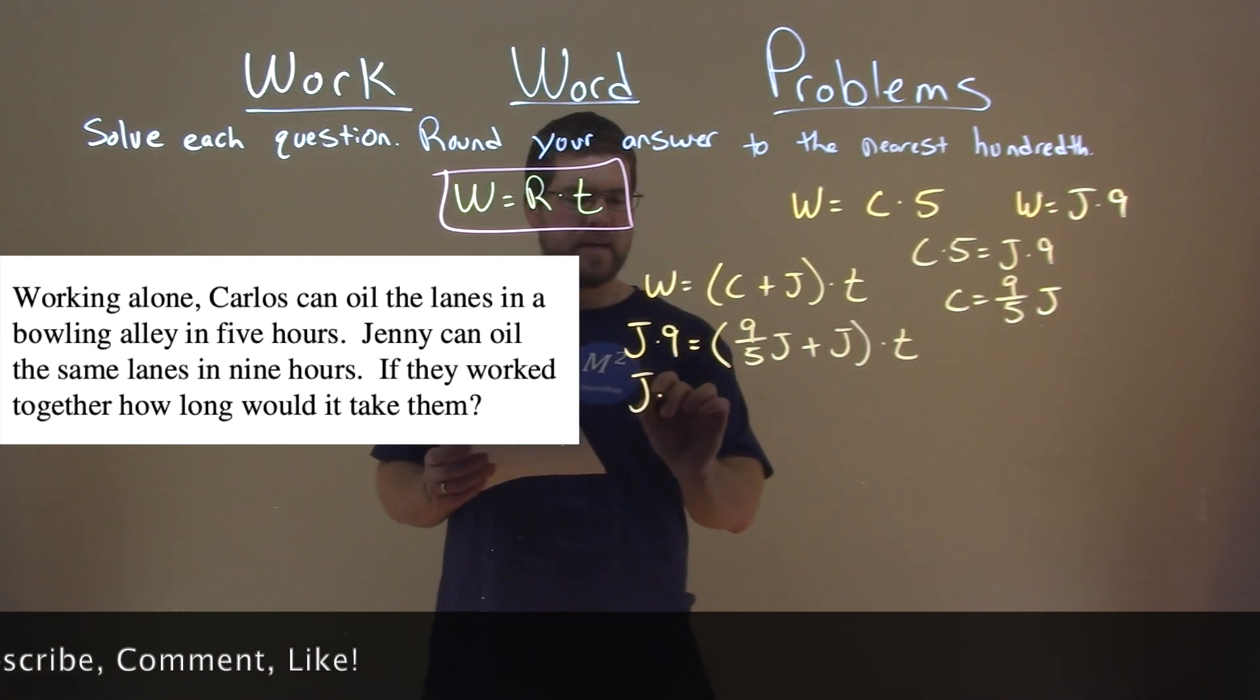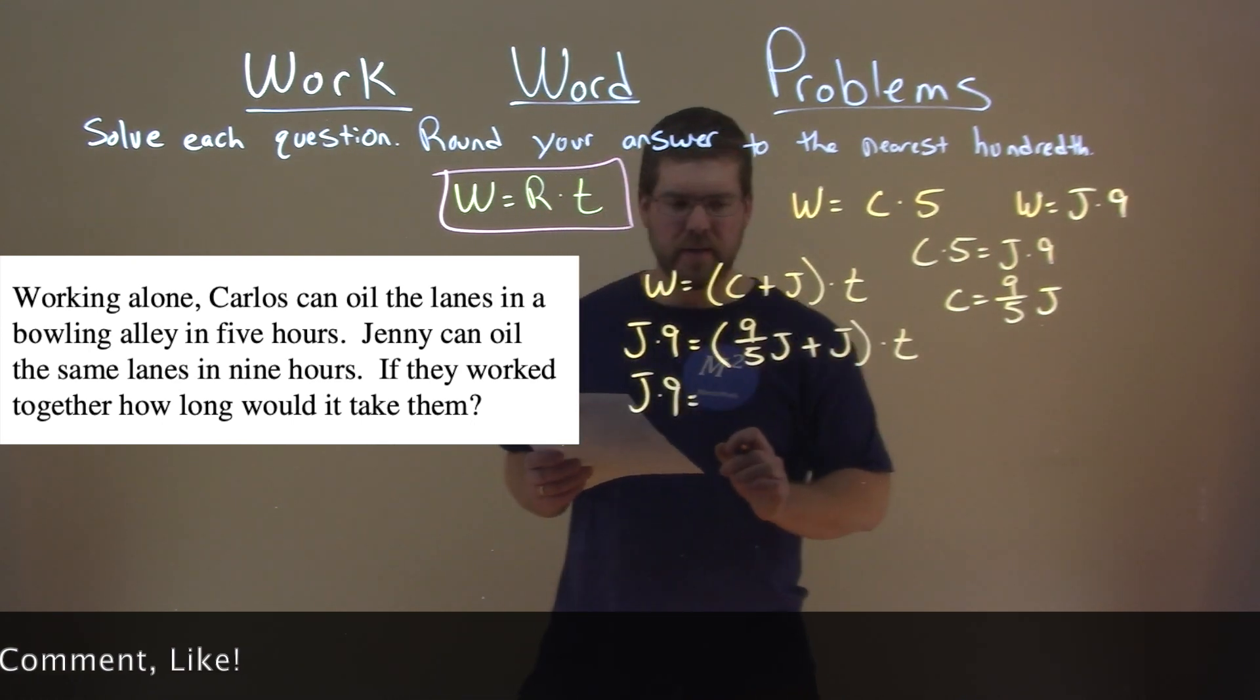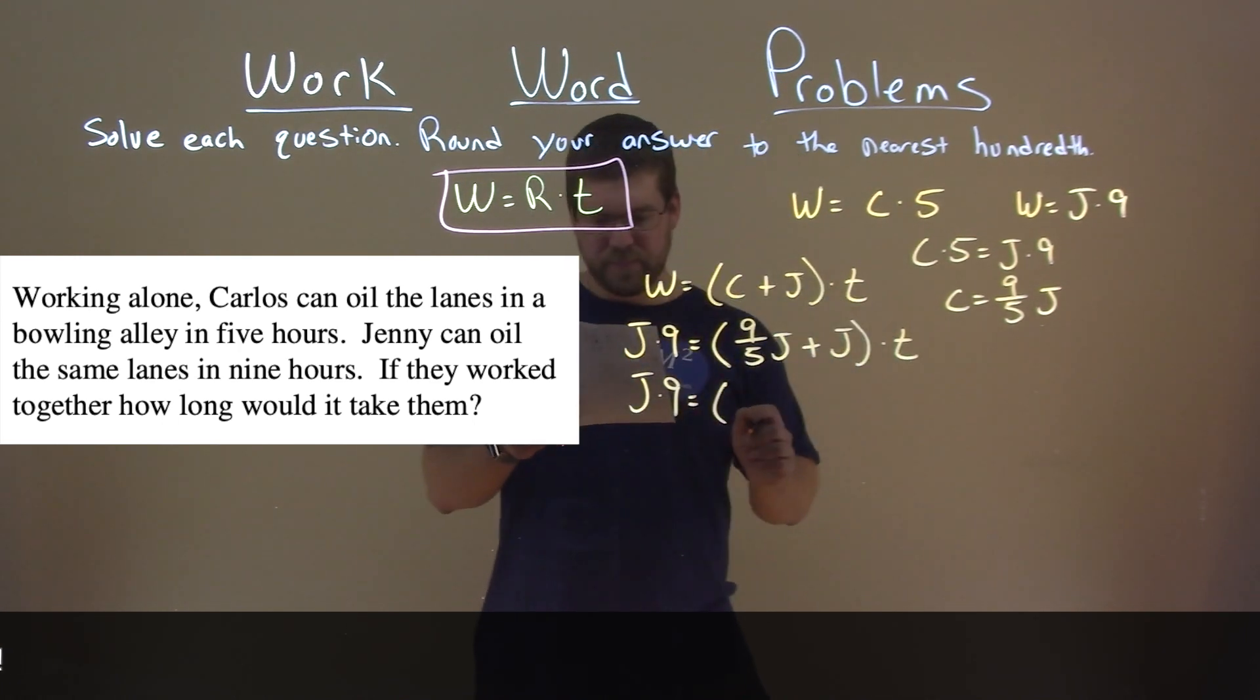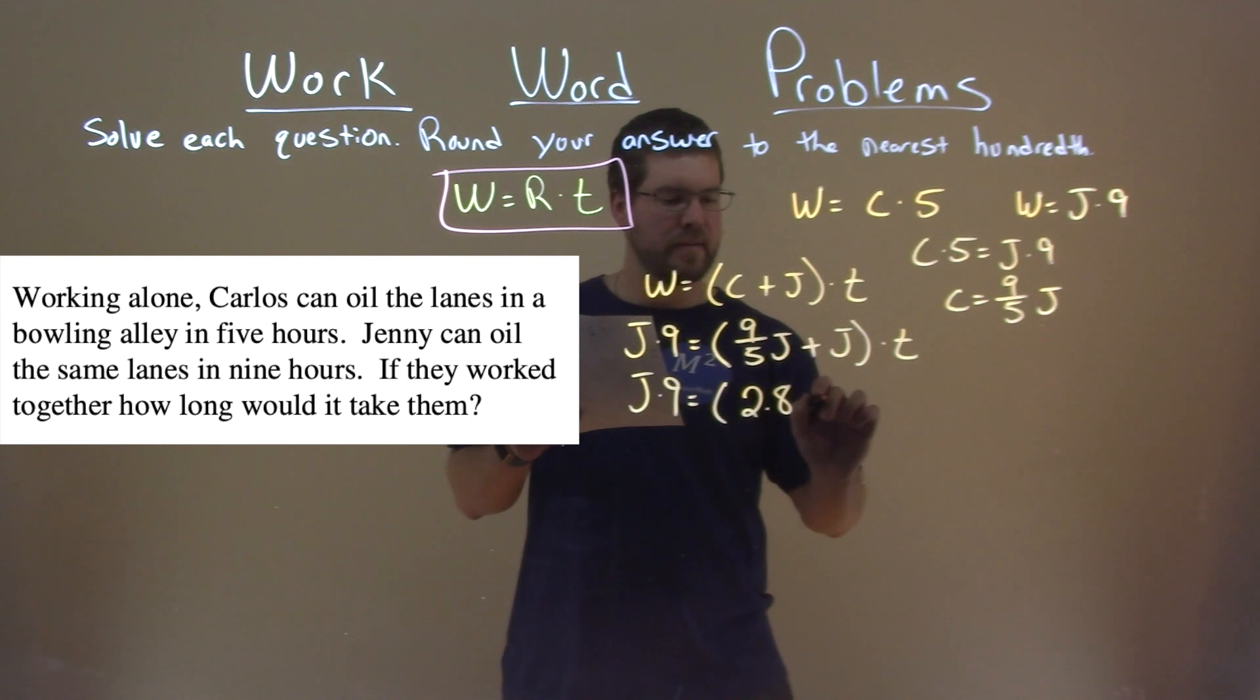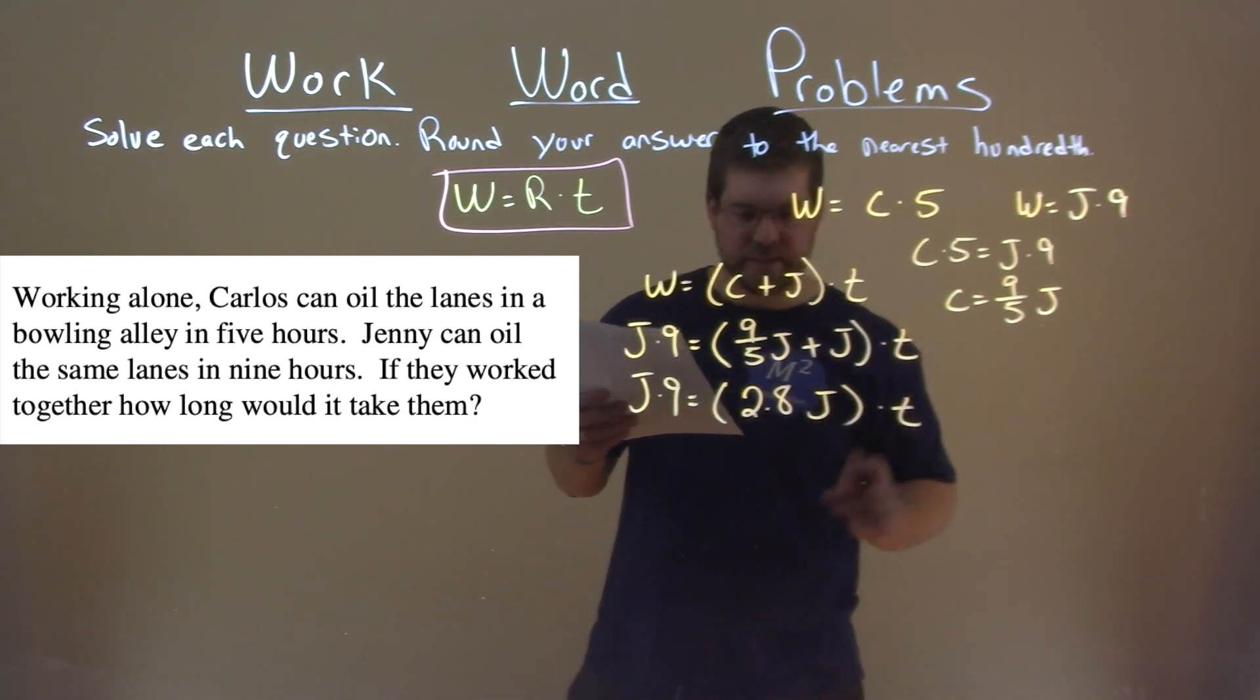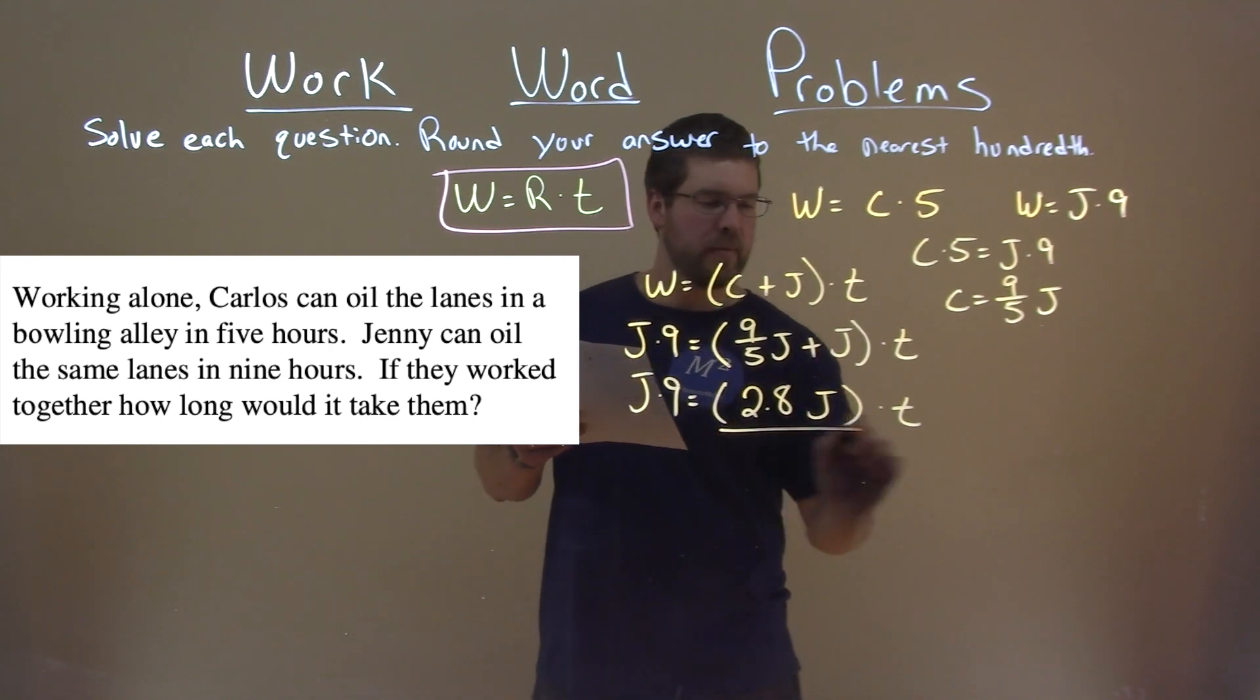So the left, J times nine, is just by itself. But on the right, nine-fifths J plus one J is actually two point eight J, mixing fractions and decimals, times time. We now divide both sides by two point eight J here.